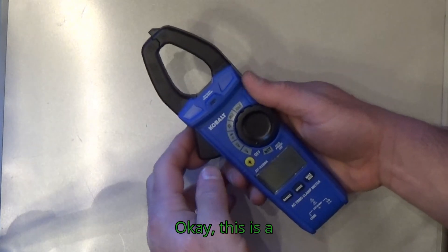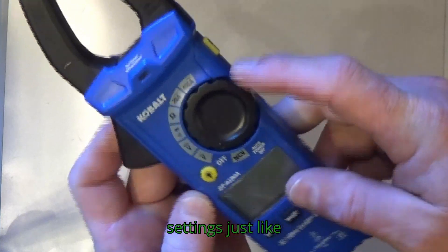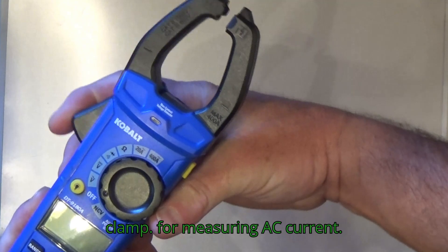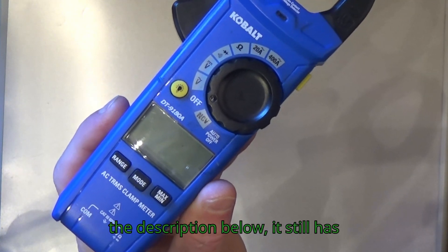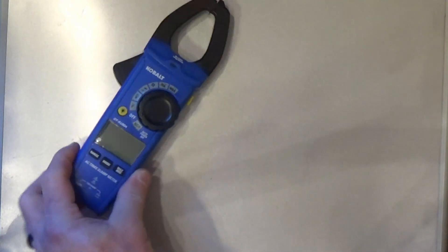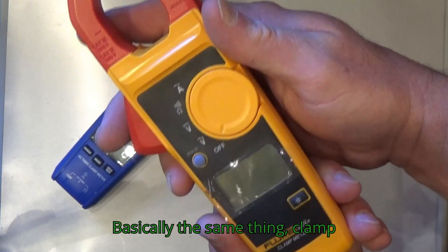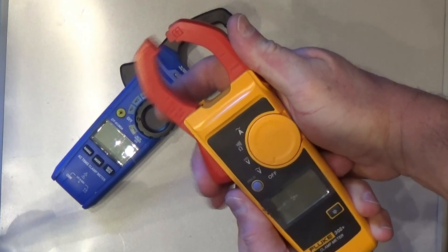Alright, let's get started. This is a cheaper clamp-on meter. It has a lot of the same settings just like a regular multimeter. We have this clamp for measuring AC current. And if you've seen the previous video, I'll put a link in the description below, it still has the connections for measuring voltage. I have another example which is a Fluke, basically the same thing: clamp on, the same plugs for measuring voltage. This also measures amps AC.